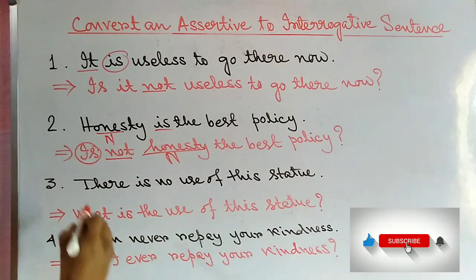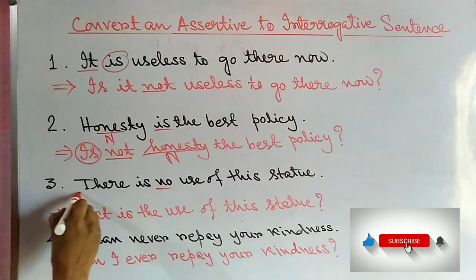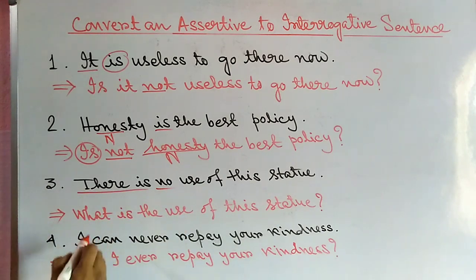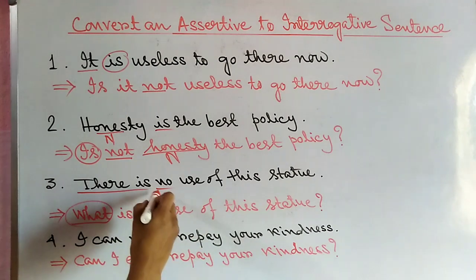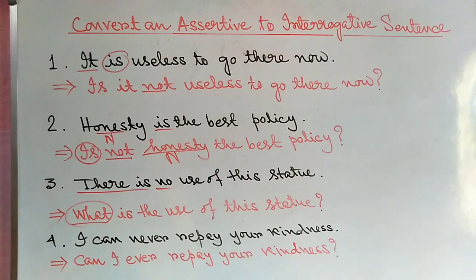Third example: 'There is no use of this statue.' When we convert this to interrogative, since it begins with 'there,' the interrogative begins with 'what.' Since the assertive sentence is negative, the interrogative becomes affirmative — when the assertive is negative, the interrogative will also reflect that by converting to affirmative.